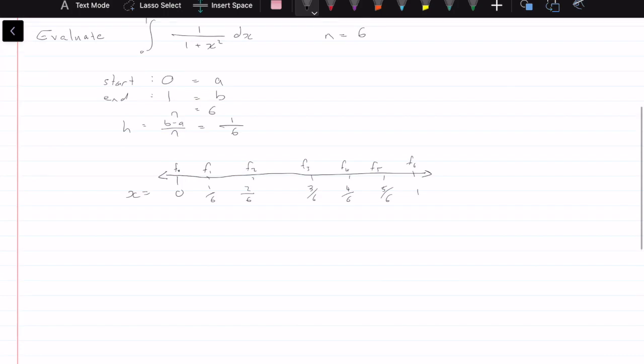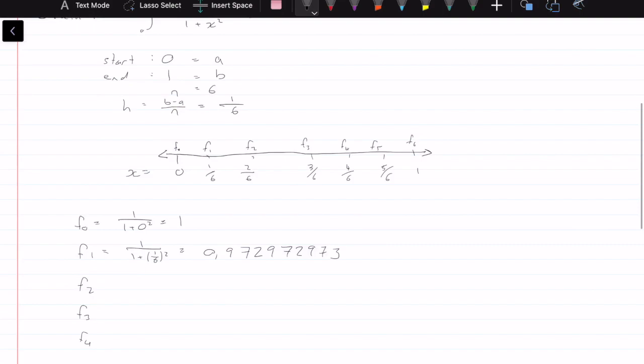Let's start with f0. f0 is going to be equal to 1 over 1 plus 0 squared, which is equal to 1. f1 is going to be equal to 1 over 1 plus 1 over 6 squared, and this value comes out as being equal to 0.972972973. Let's continue with f2, f3, f4, f5, and f6.